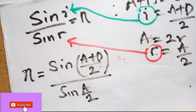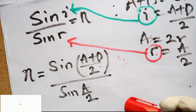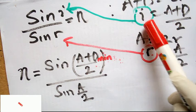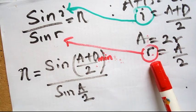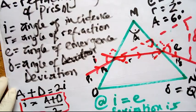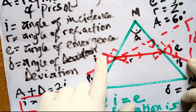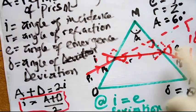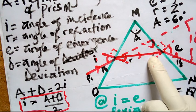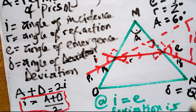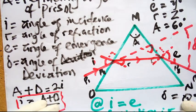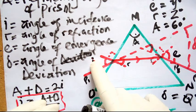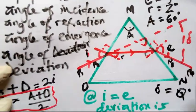At minimum deviation, the conditions I equals E and A equals 2R both apply, and we use the formula n = sine((A + D) / 2) / sine(A / 2). On completion of the experiment, tabulate your readings and repeat the experiment for different values of I — say 40, 50, and so on — doing the experiment a minimum of 5 times. Tabulate the serial number along with the values of I, R, E, and delta for each trial.